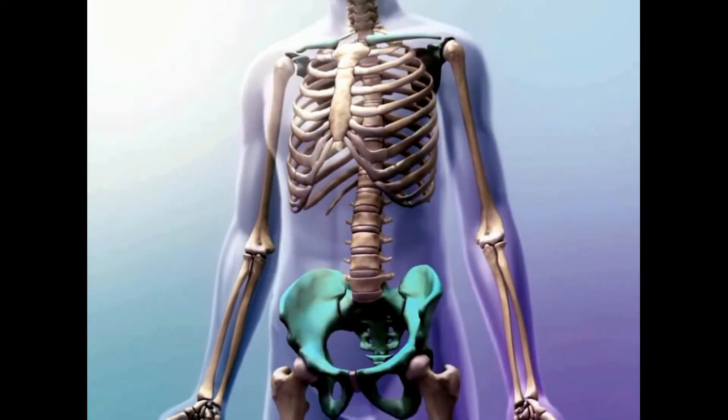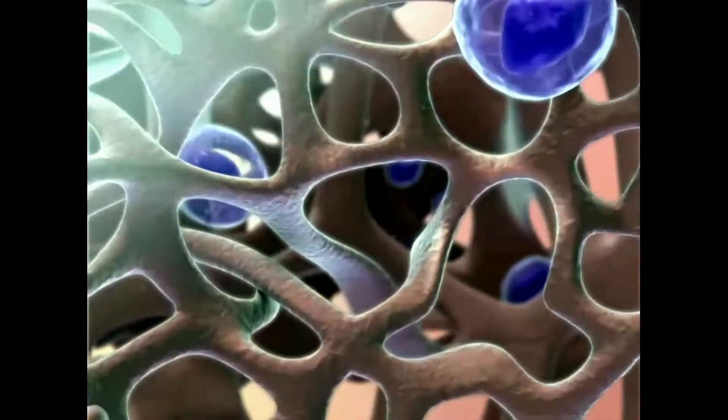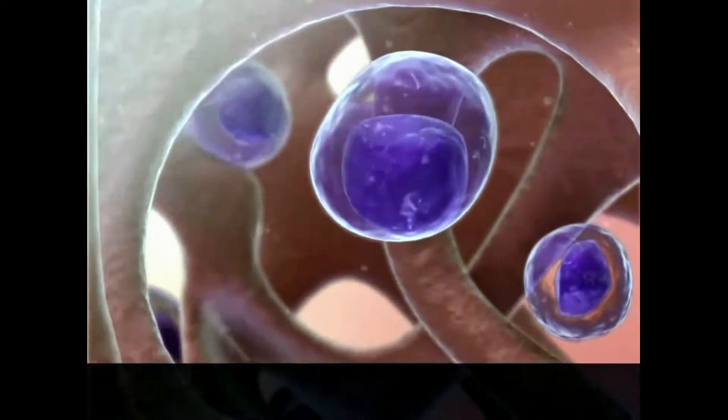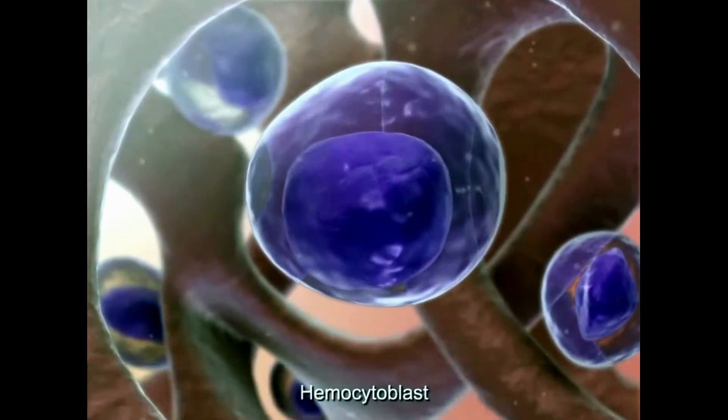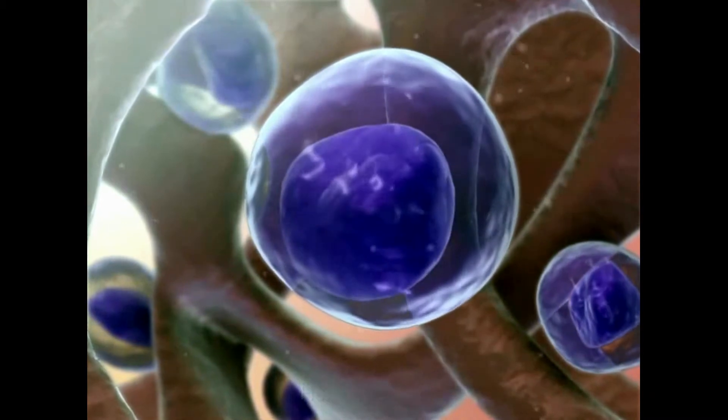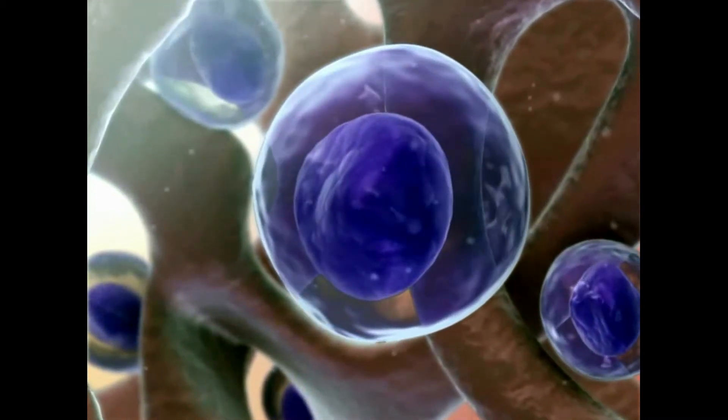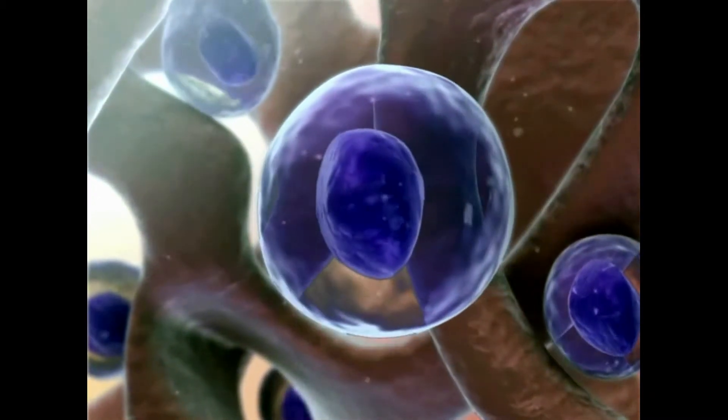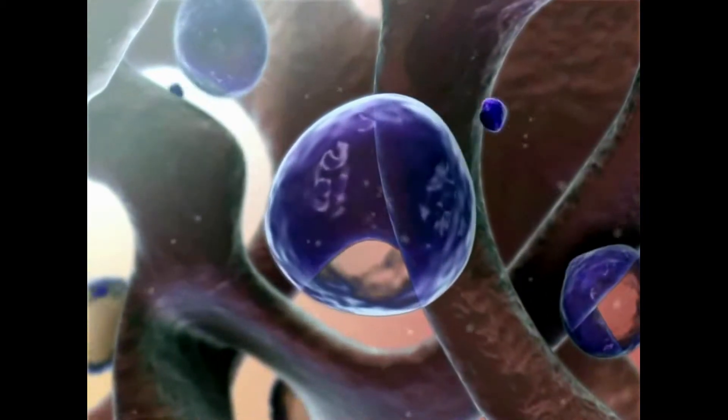Inside the red bone marrow of spongy bone, stem cells known as hemocytoblasts give rise to the different types of blood cells, including red blood cells. During the development process, the hemocytoblast ejects its nucleus, allowing the cell to carry more oxygen to the tissues.